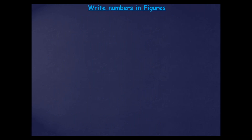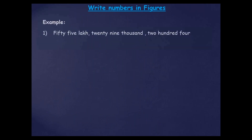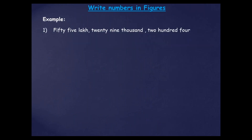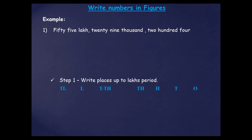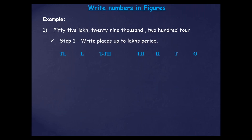Now we are going to learn how to write numbers in figures. For example, there is a number given: 55,29,204. First of all what we have to do — we should write the places up to the lakh period. From the left side, if you see the number, it is given 55 lakh. It means up to the lakh period you have to write the places: 10 lakh, lakh, 10,000, 1,000, 100, 10s and 1s.